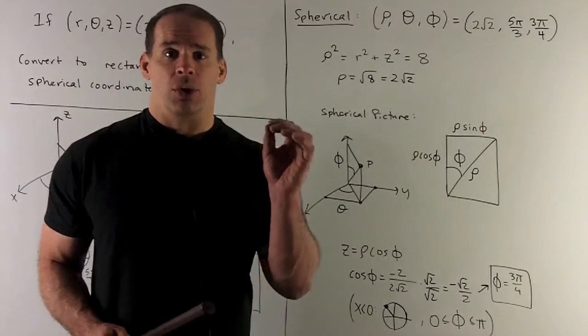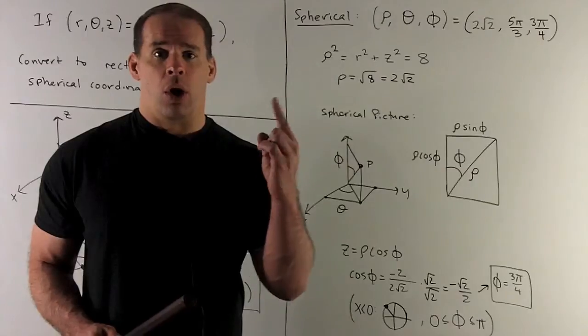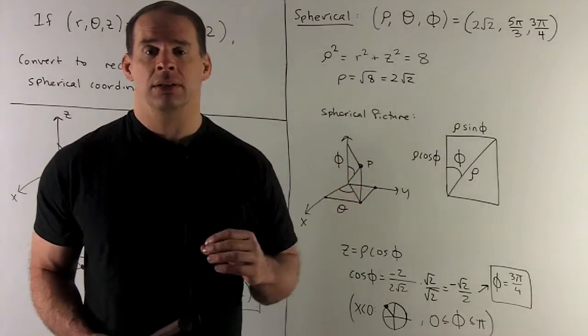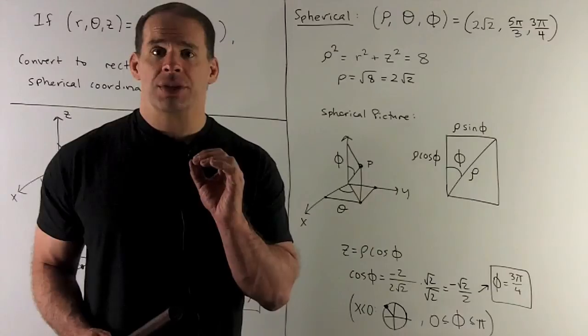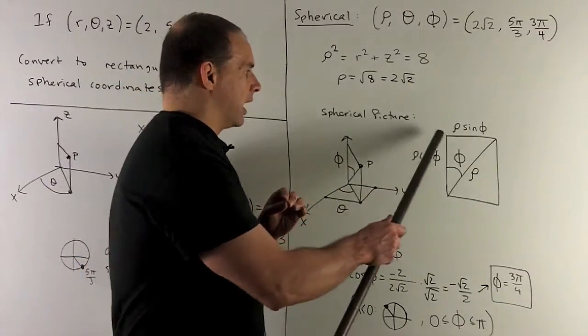Okay, phi is going to be between 0 and pi. We get pi if we go all the way down to the negative z-axis. The triangle for this, so I'll have a right triangle, it's going to look like this.